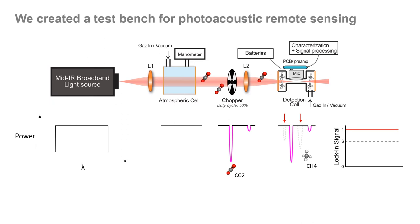To determine the concentration of the target gas in the optical path, or in this case, in the atmospheric cell, we only have to compare the acoustic signal previously produced in the detection cell to a calibration measurement with no gas in the atmospheric cell. The lock-in signal is then maximum, and we can retrieve the gas concentration by simply looking at the difference in acoustic signal.